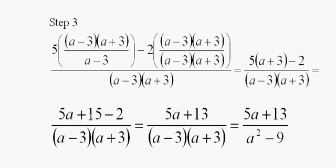and I guess the 15 and negative 2 will reduce to 13, so 5a plus 13 over a minus 3 times a plus 3. I can leave the answer like this, or change the a plus 3 times a minus 3 to a squared minus 9.